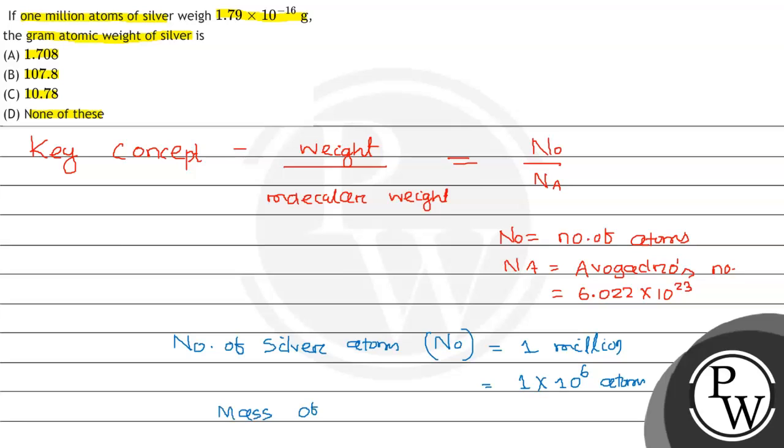Mass of silver is given as 1.79 × 10⁻¹⁶ gram. Yehaan par number of atoms, mass of silver be diya gya hai, and Avogadro's number ka value humei pata hai, so we need to find out the molecular weight or gram atomic weight.